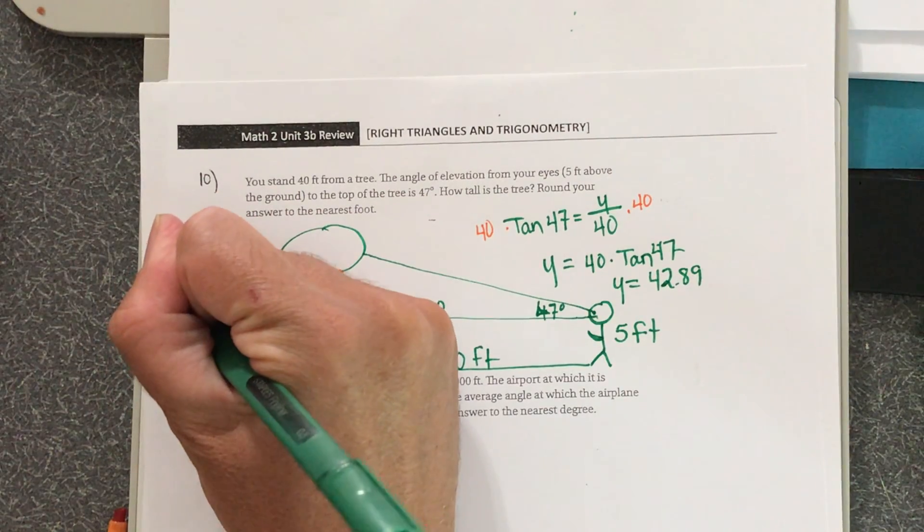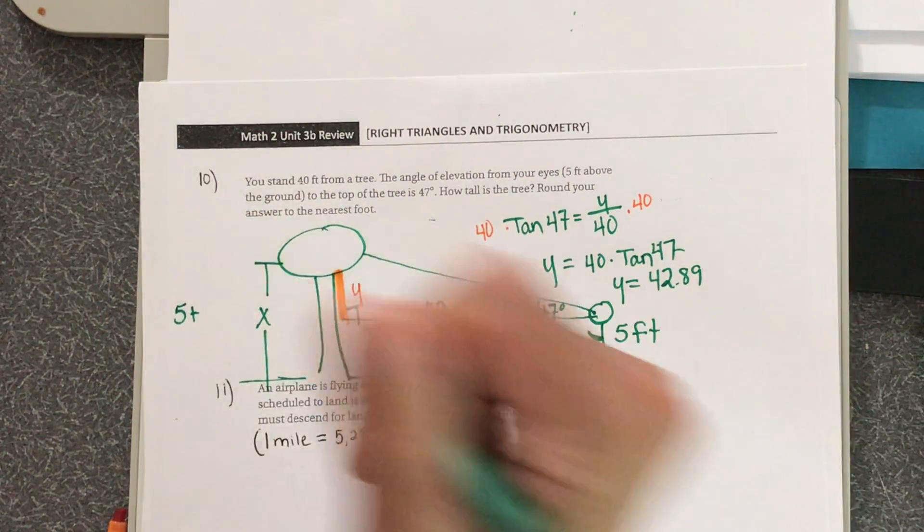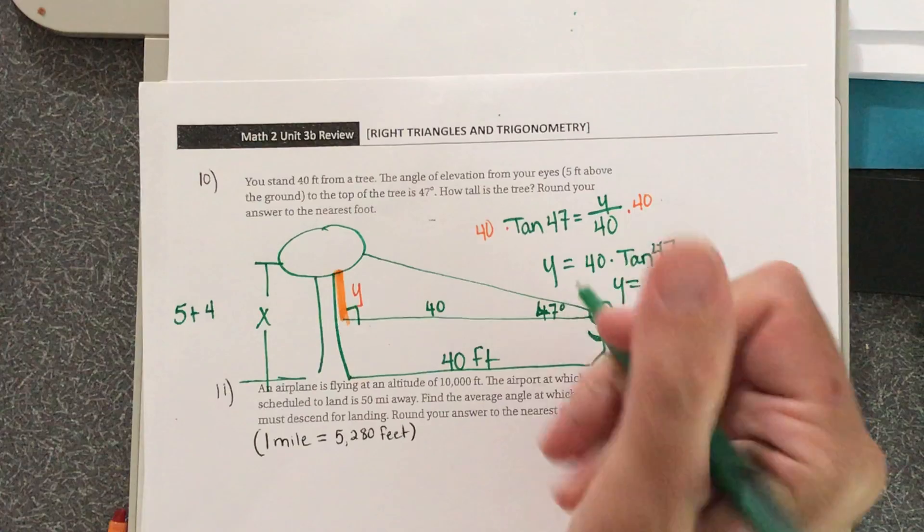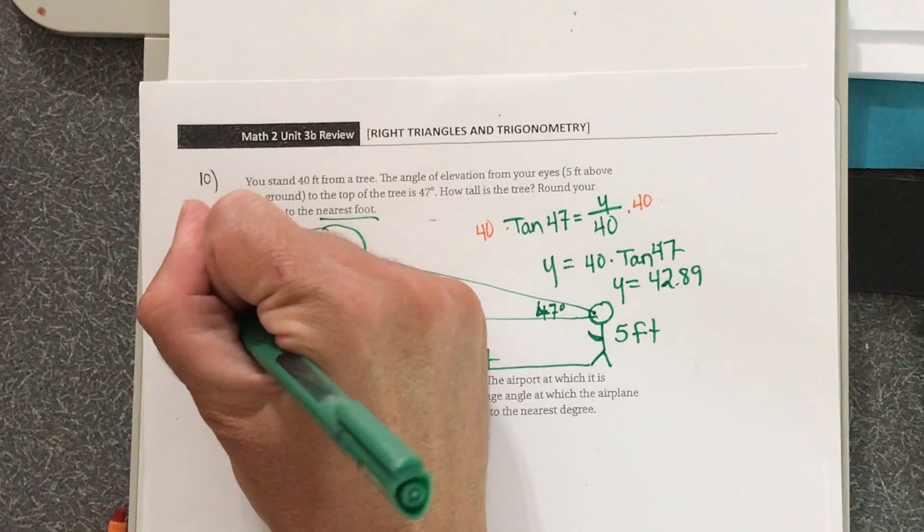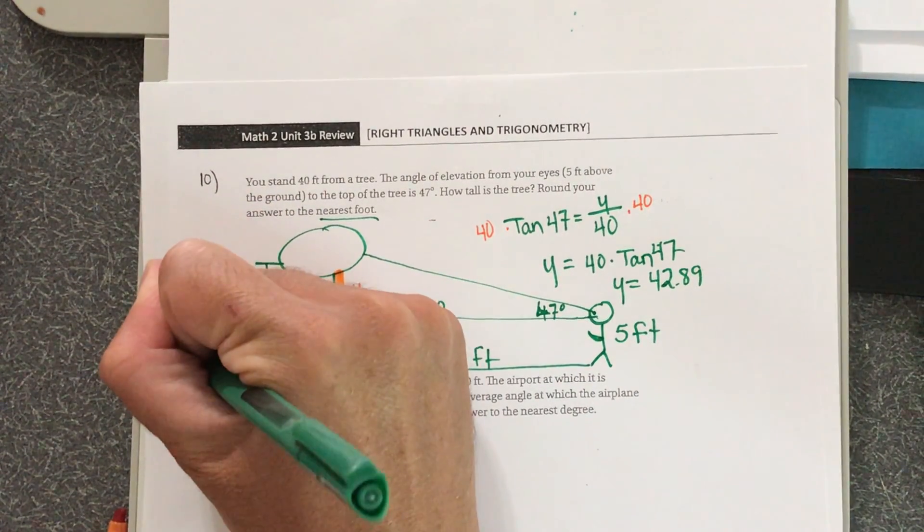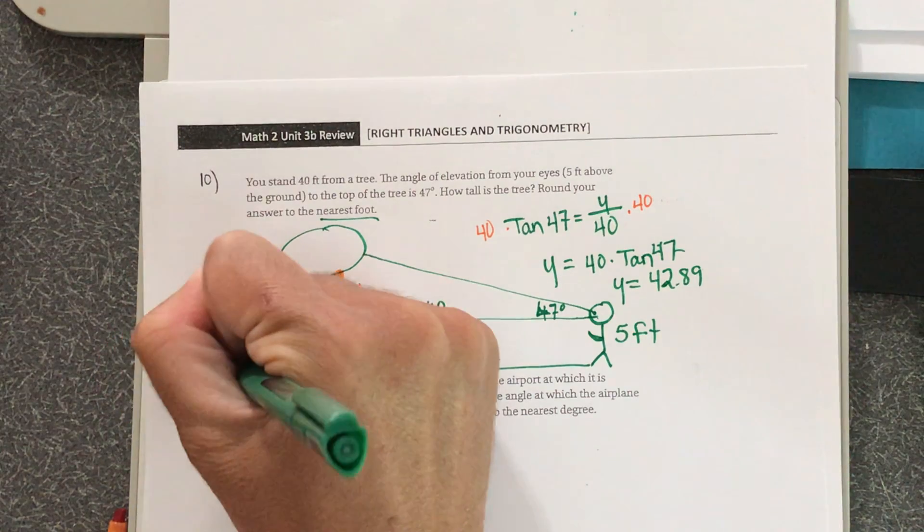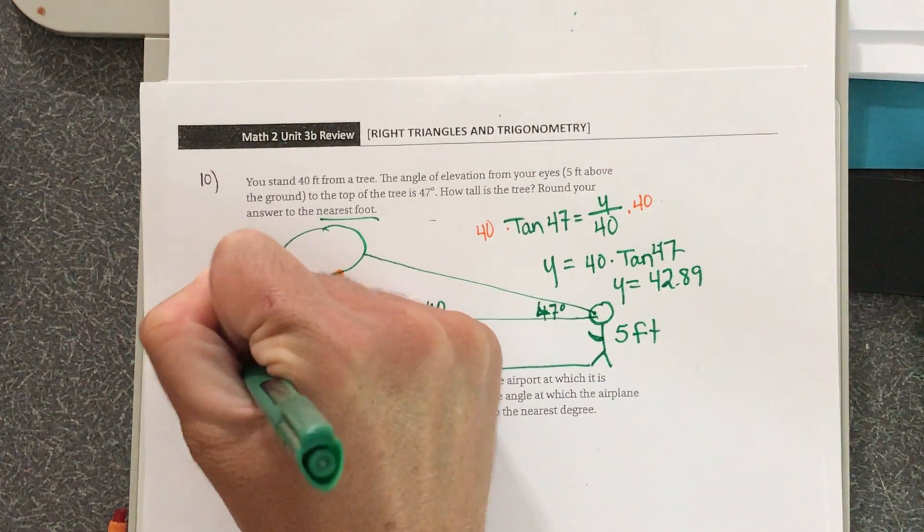So 5 plus—round to the nearest foot—5 plus 43 is 48. So the tree is 48 feet tall.